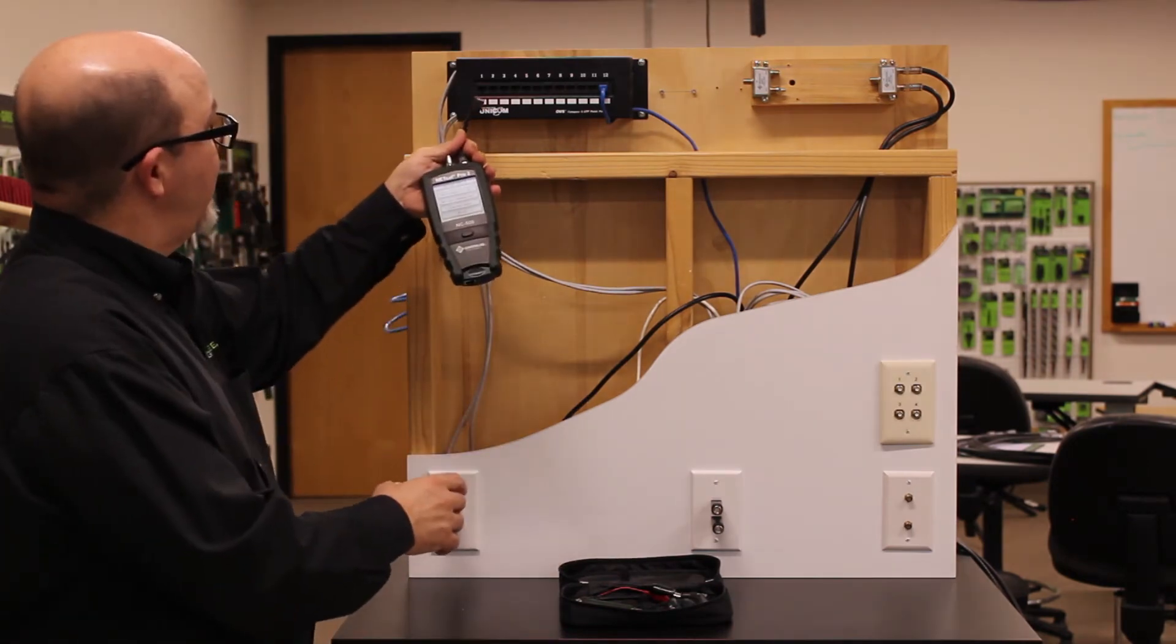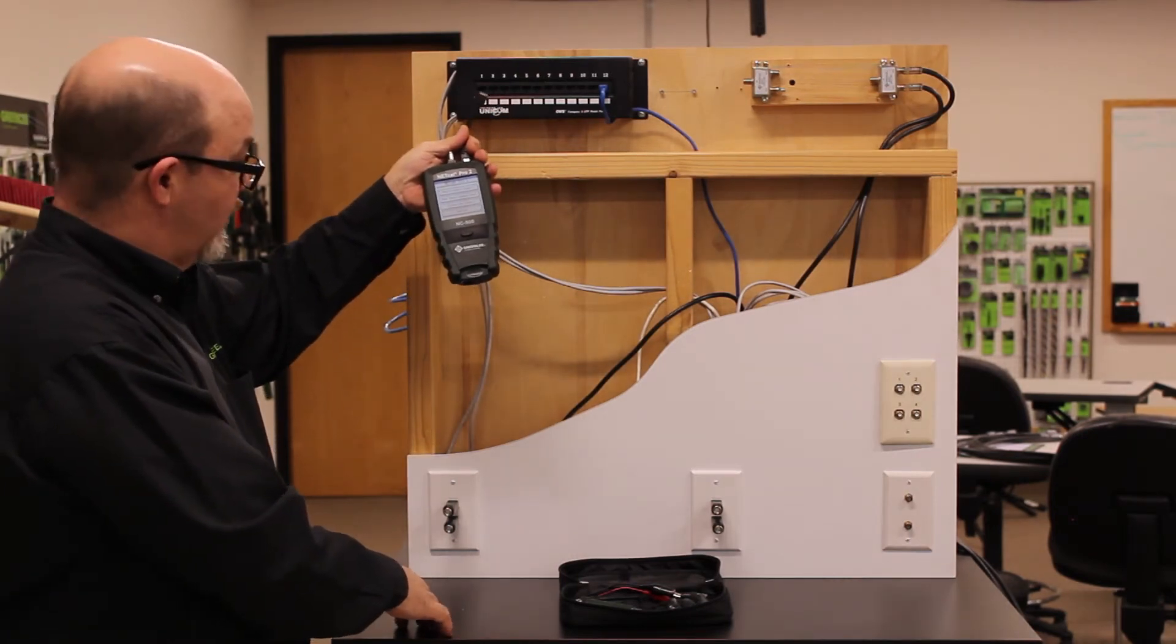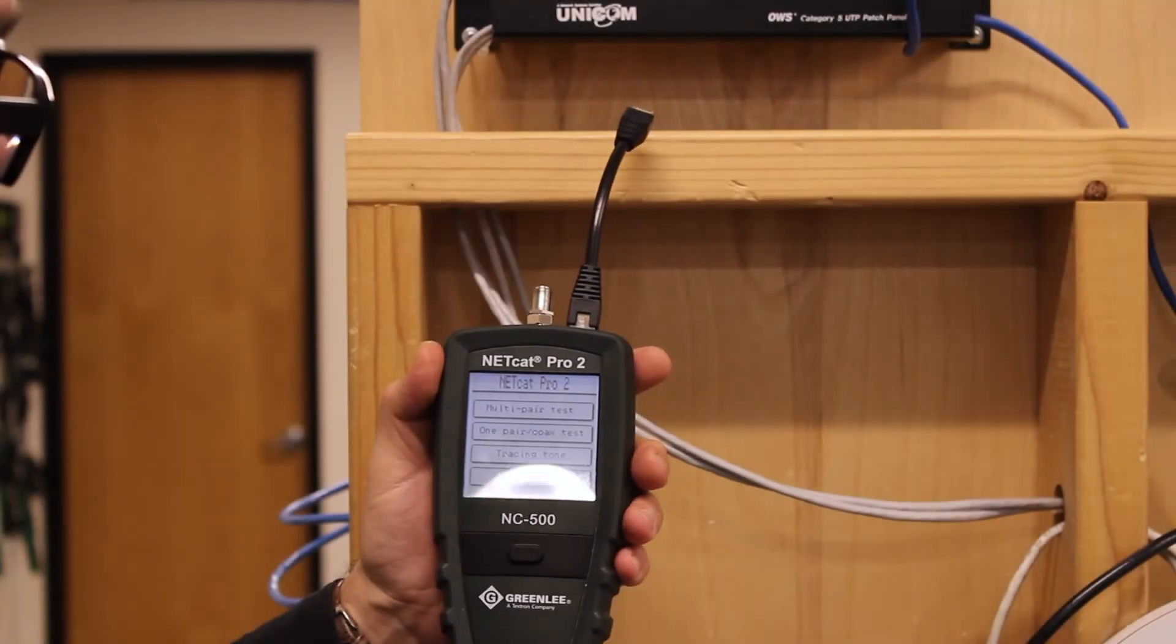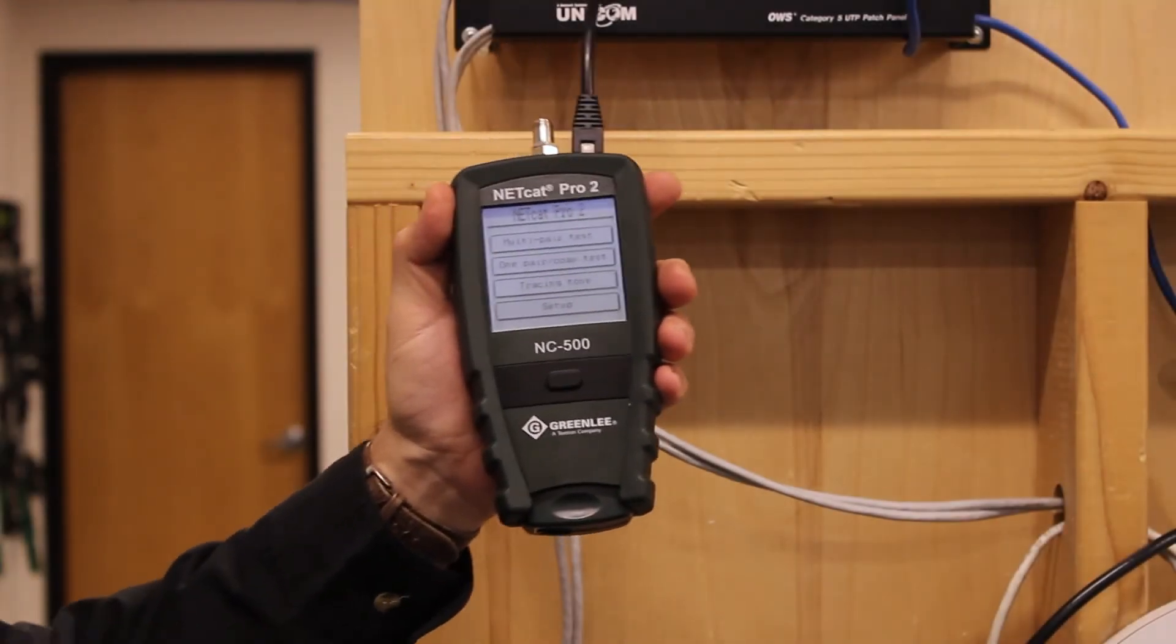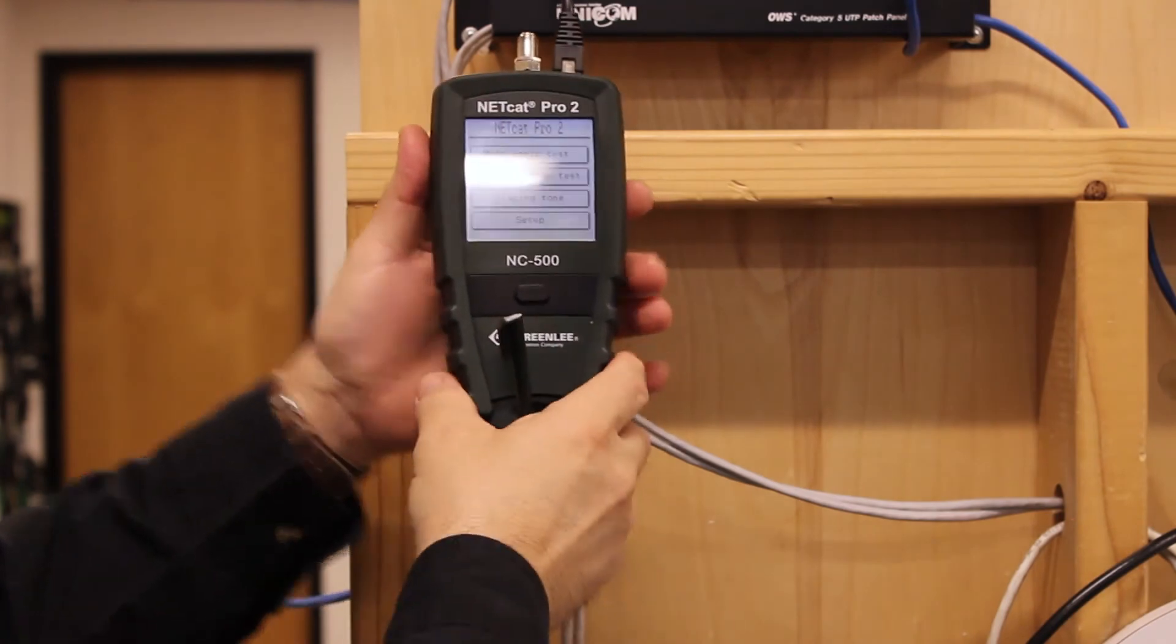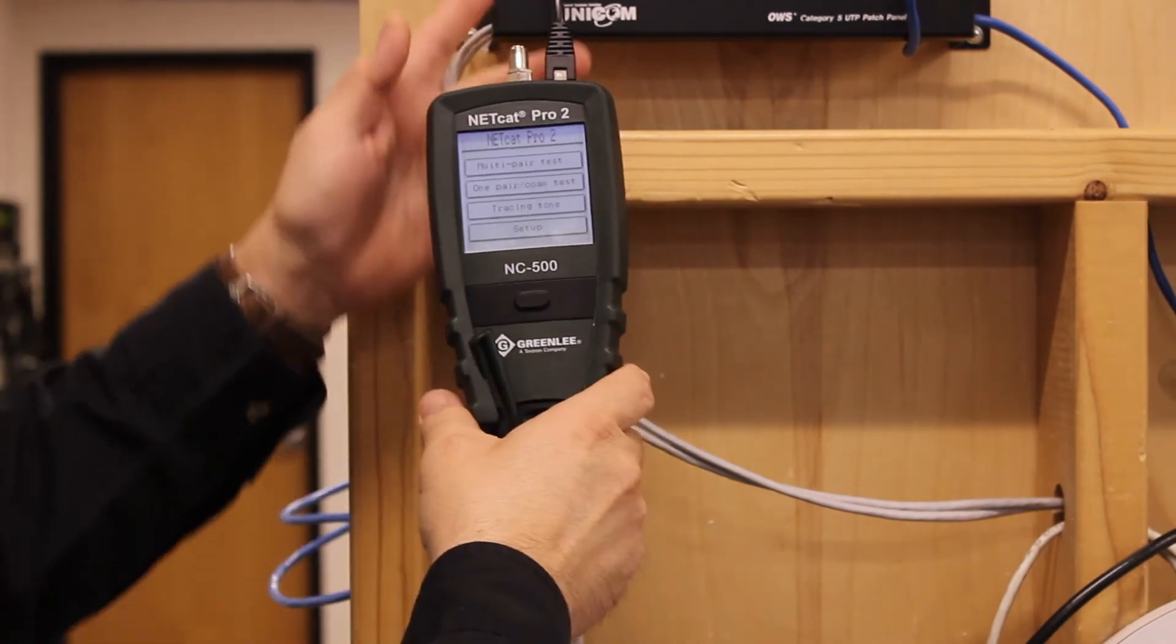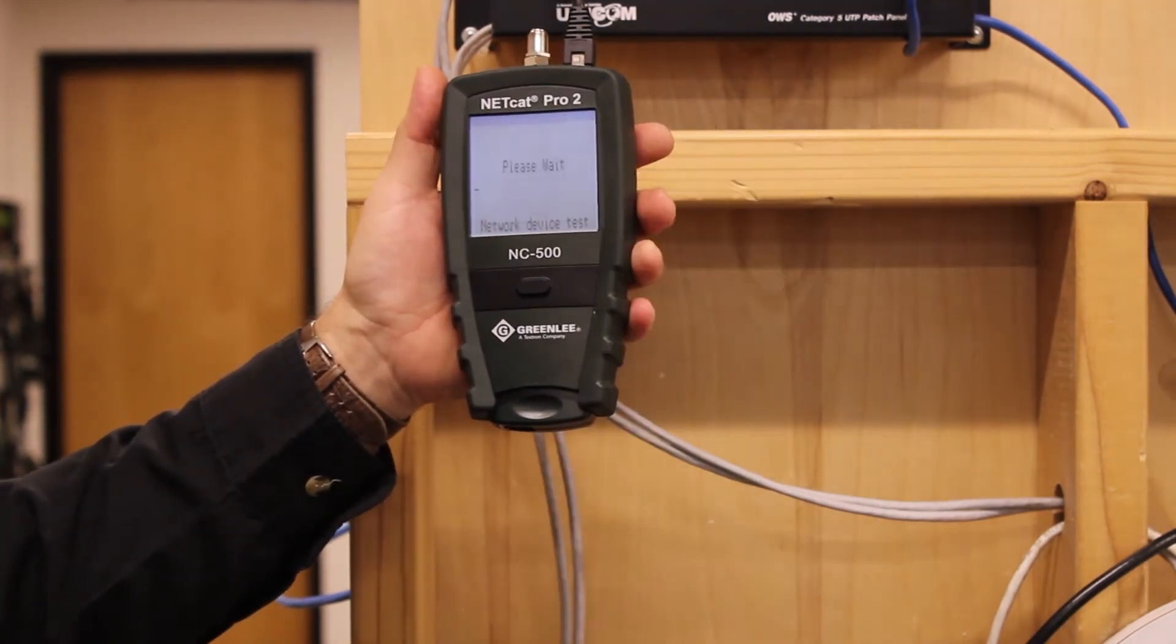We'll then go to the patch panel and plug into each individual port to determine where it is terminated at the jacks. We'll now take the NC500 and plug it into the various ports on the patch panel. To initiate the test, use the RJ45 network patch cable, plug it into the patch panel port, and then select multi-pair test.